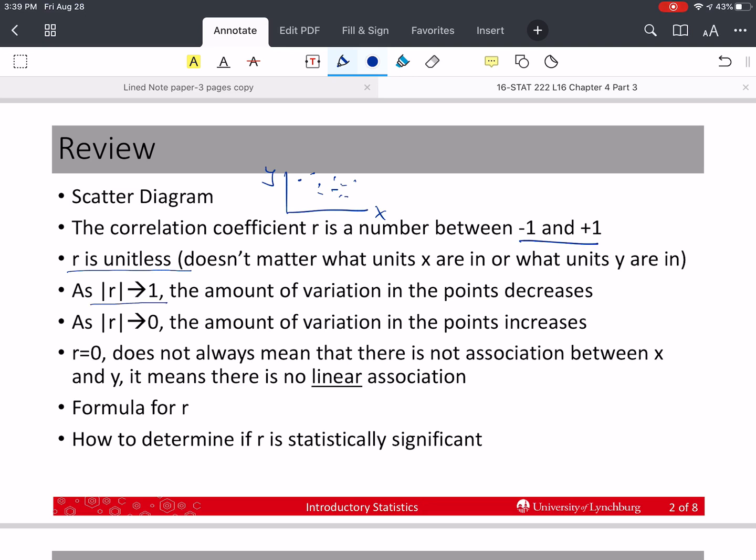And then as R, the absolute value of R approaches 1, that means R approaches negative 1 or R approaches 1, that the amount of variation in the points around the line decrease. So we would see for a correlation of 1, every point's on the line. For say 0.8, there's not a lot of variation. And then as we get closer to 0, this gets more and more variation around the line.